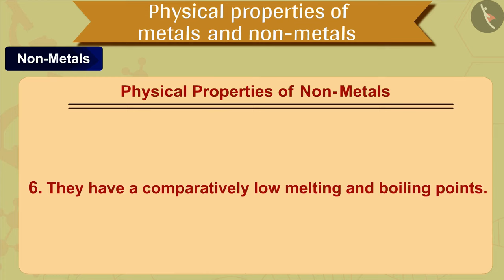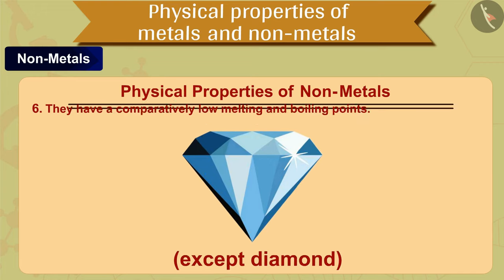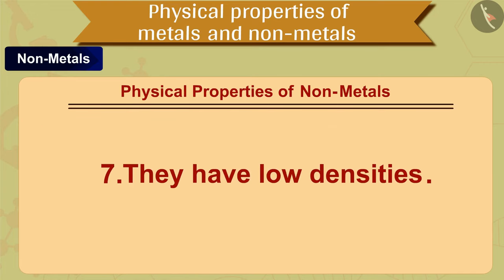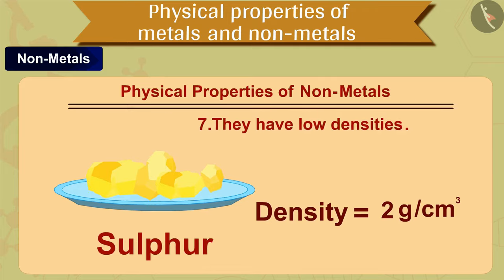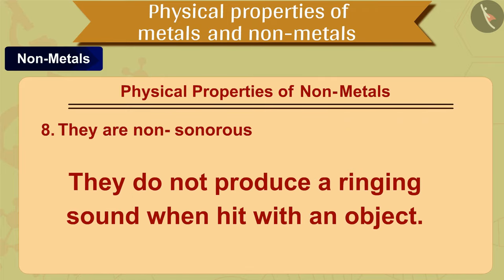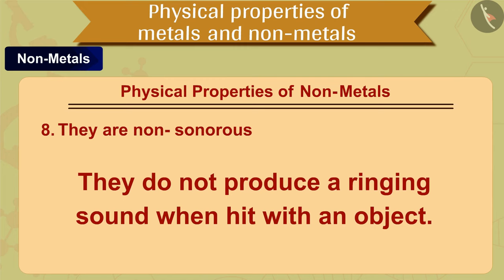The sixth property is that non-metals have comparatively low melting and boiling points, except diamond. The seventh property is that they have low densities — they are light substances. For example, sulfur has a density of 2 grams per centimeter cube. The eighth property is that non-metals are non-sonorous — they do not produce a ringing sound when hit with an object.